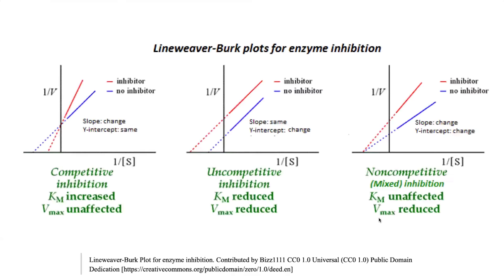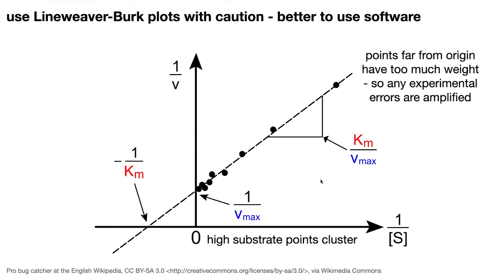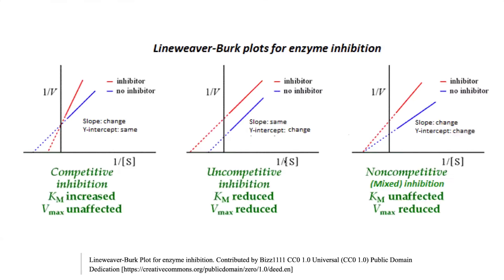Where Lineweaver-Burk plots come in really handy is for trying to figure out what type of inhibition you're dealing with. There are basically different types of inhibition that leave different types of evidence — they can either change your apparent affinity or change your velocity — and you can see that evidence in these Lineweaver-Burk plots. You can also use nonlinear regression to figure out types of enzyme inhibition as well.